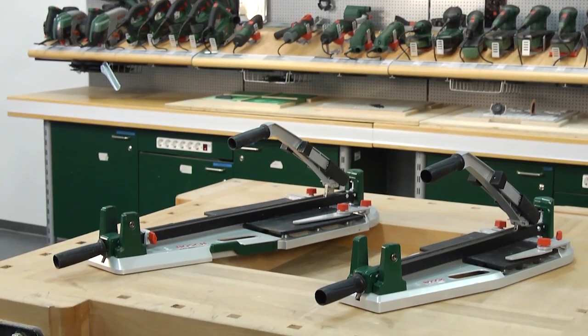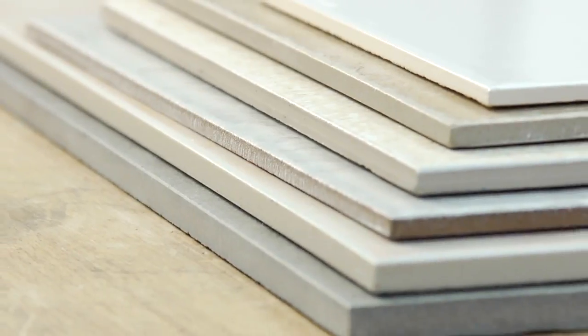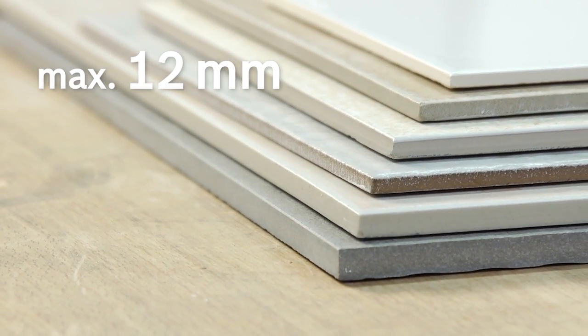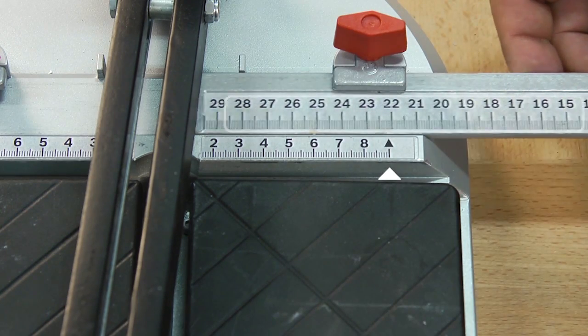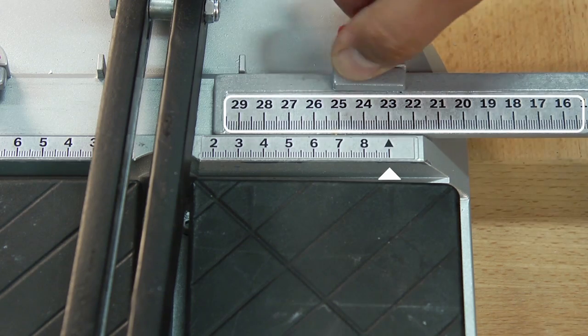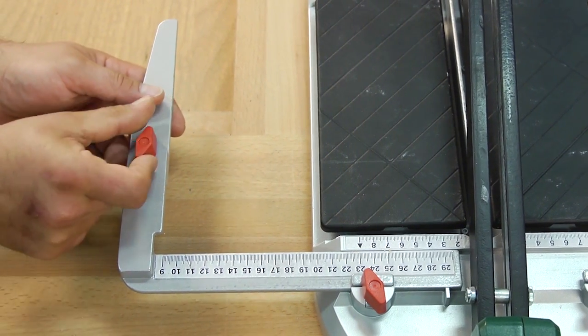Both tile cutters are suitable for cutting up to 12mm thick indoor and outdoor tiles. Precise cuts are made easier by the two-piece scale and the parallel and angle guide.